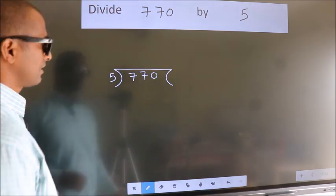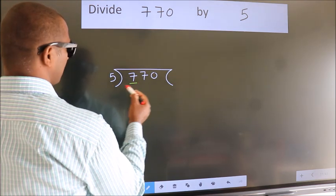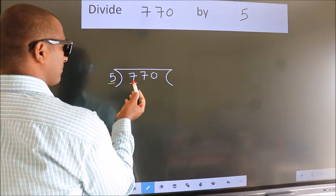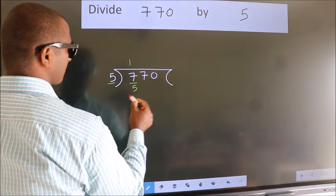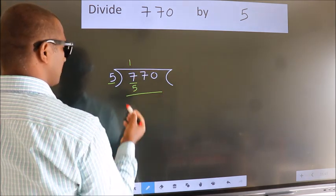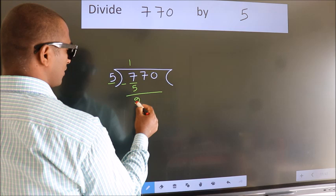Next, here we have 7, here 5. A number close to 7 in the 5 table is 5 - once 5. Now we should subtract. We get 2.